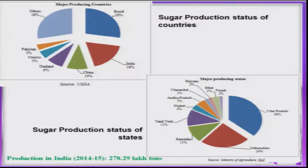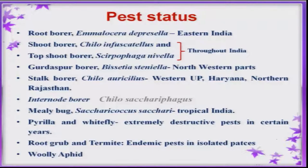In India, major states like Uttar Pradesh and Maharashtra grow a lot of sugarcane and at the same time they produce a higher amount of sugar in the country. The important pests occurring in different states include lepidopteran pests like early shoot borer, internode borer, and top shoot borer, and other than these, there are few sucking insect pests and also occasional pests which infest this important crop.